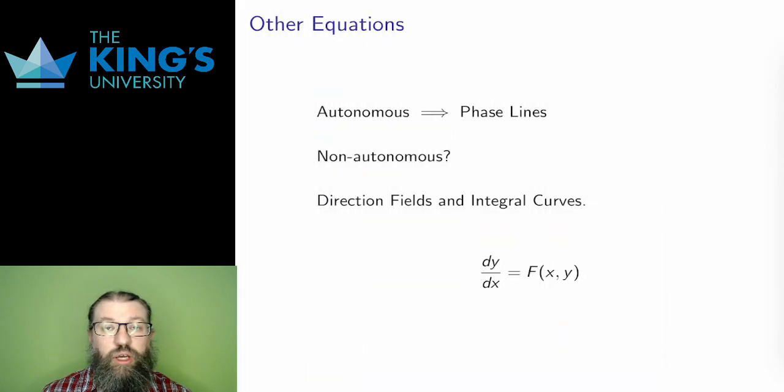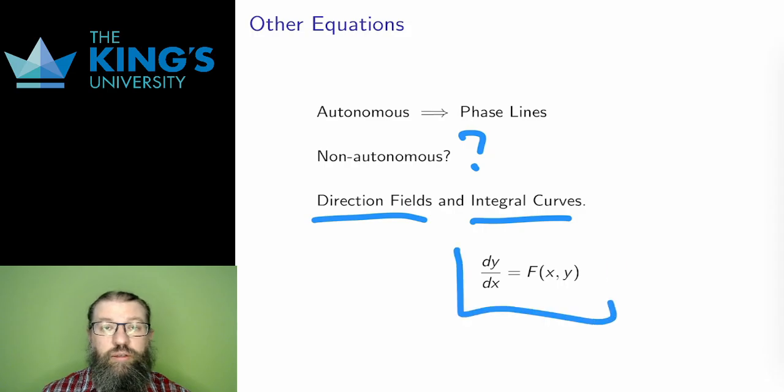Phase lines are great for autonomous equations, but what about non-autonomous first-order DEs? Well, there is another technique for these, a technique involving two constructions, direction fields and integral curves. I'll spend the rest of this video describing the second technique. Say I have a first-order equation, where the derivative, which I'll now write dy over dx, is isolated on the left, and everything else is on the right. And I'll use f of xy as a notation for the expression on the right.